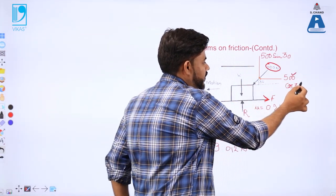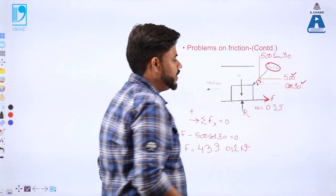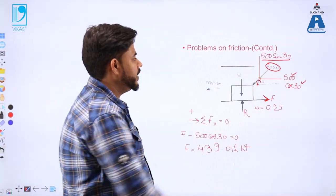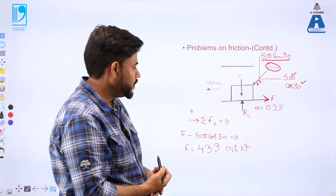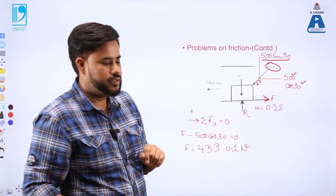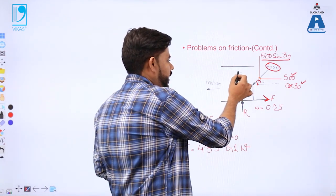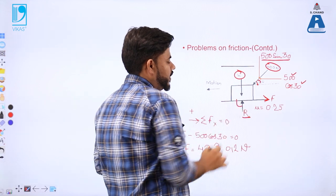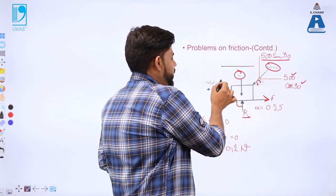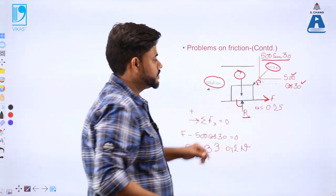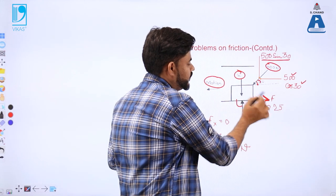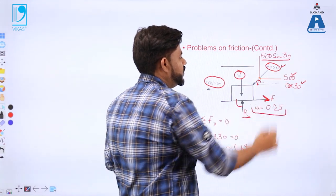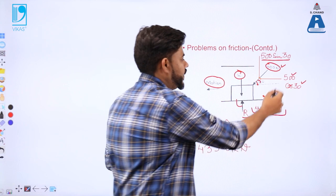The two components are 500 cos 30 (horizontal component) because the inclination is 30 degrees, and 500 sin 30 (vertical component). To summarize the free body diagram: the load W acts downward; the normal reaction R balances it perpendicular to the surface; the motion is in the pushing direction so the frictional force F acts in the reverse direction with coefficient of friction μ = 0.25; and the 500 Newton force is broken into 500 cos 30 and 500 sin 30.